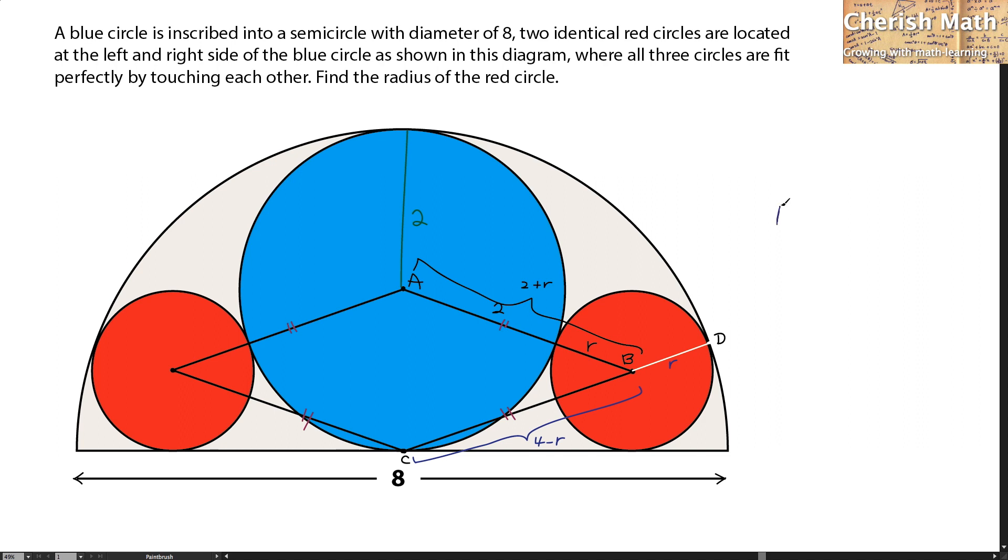The distance of AB is the same as the distance of CB. And AB is 2 plus R. CB is 4 minus R. And the value of R that we are getting here is 1 unit. And we solve the puzzle.